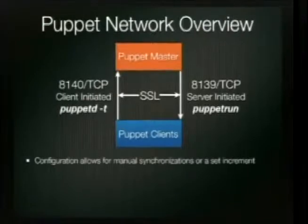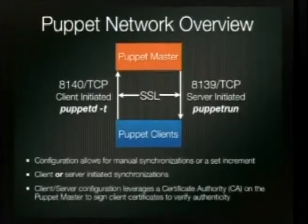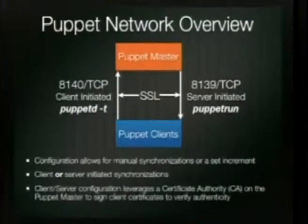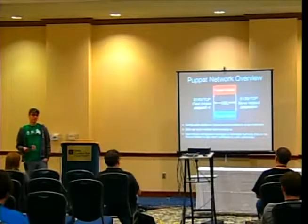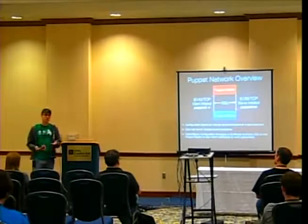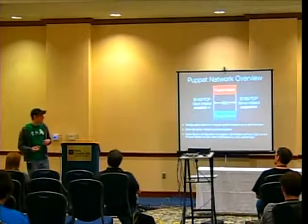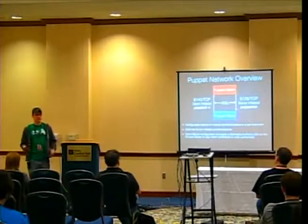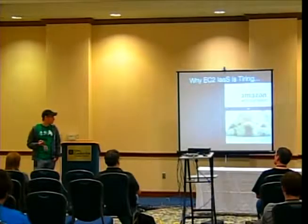Configurations allow for manual synchronizations or a set increment — 30 minutes is the general rule. Client or server can initiate depending on whether you're pushing or pulling. The client-server configuration actually has a CA built in — you can use your own CA if you want, with an intermediary CA, and tie this into your existing PKI. By default, Puppet auto-generates a CA and every client that connects hands over a CSR, which gets signed, establishing an SSL connection.